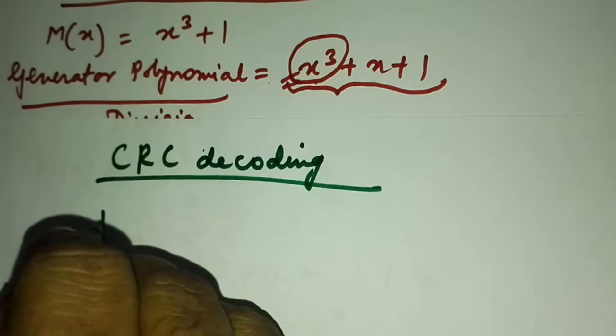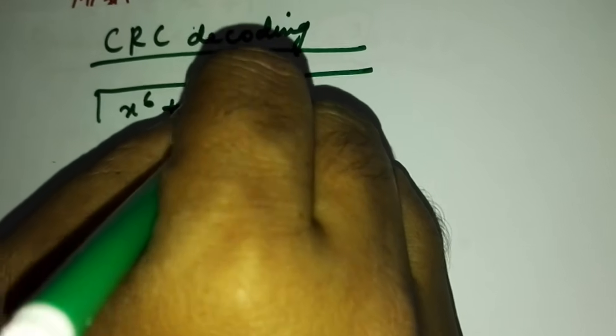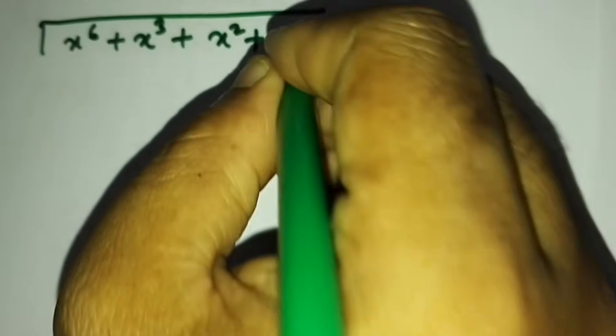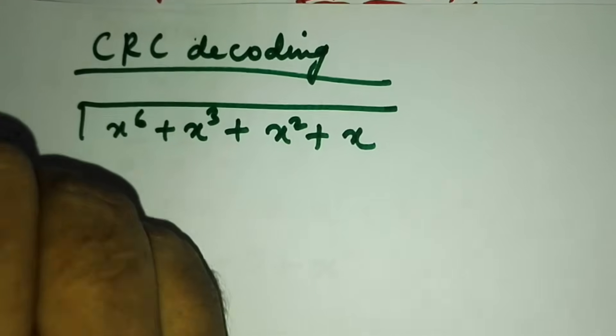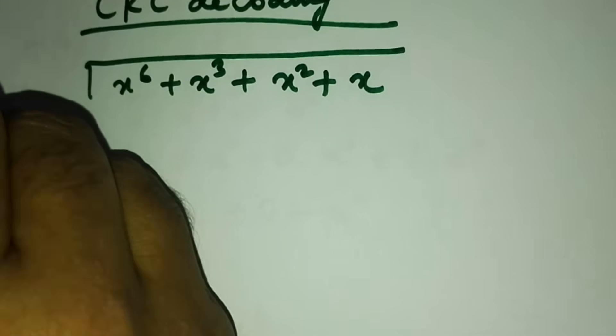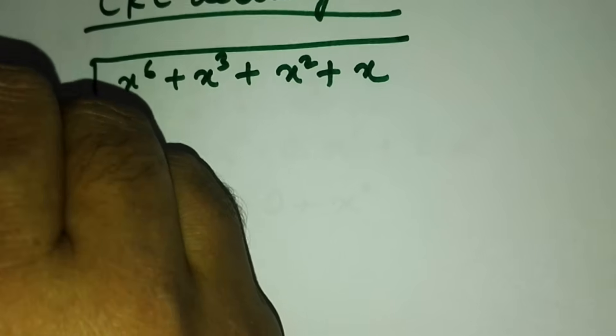Now this is CRC decoding using polynomial. Here we have the code word x⁶ + x³ + x² + x, and we have the divisor as x³ + x + 1.